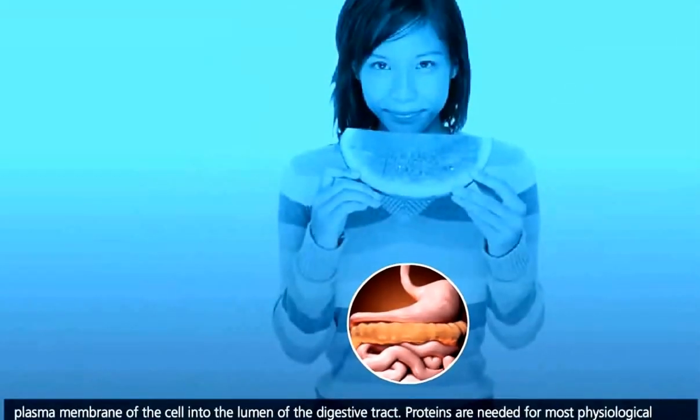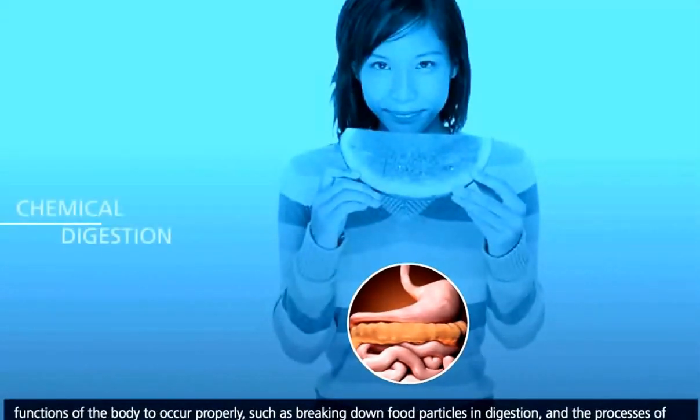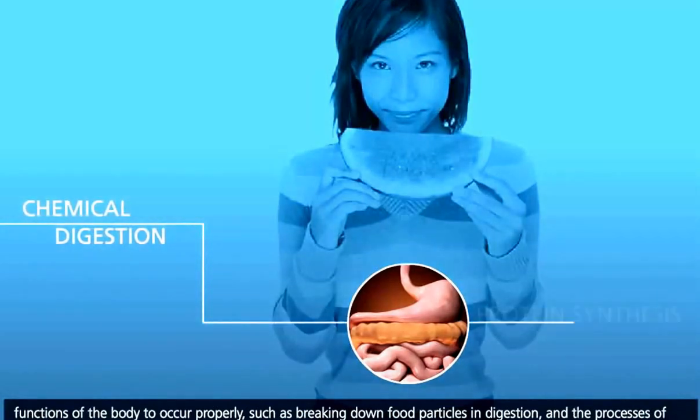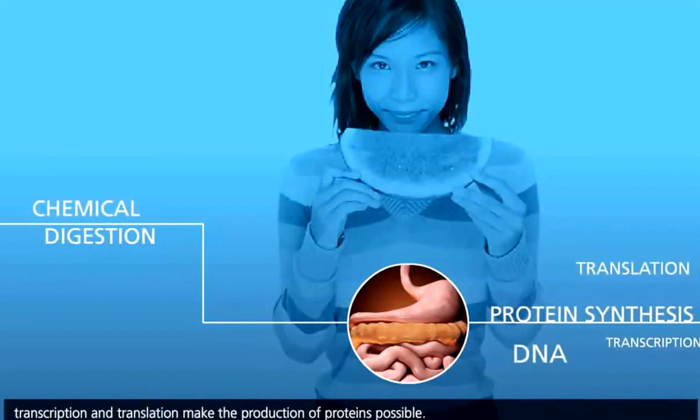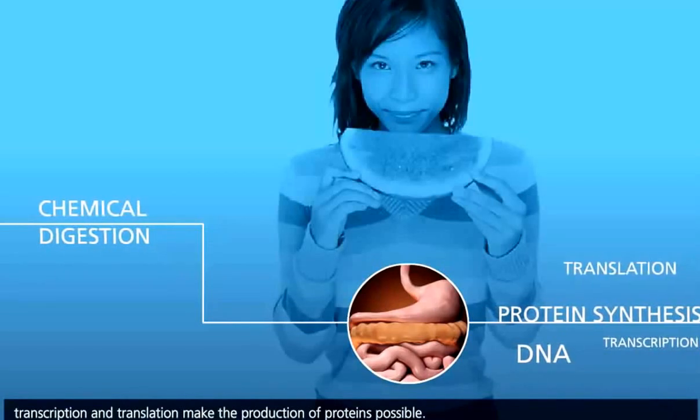Proteins are needed for most physiological functions of the body to occur properly, such as breaking down food particles in digestion, and the processes of transcription and translation make the production of proteins possible.